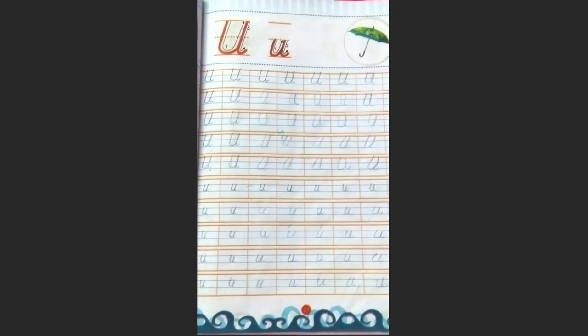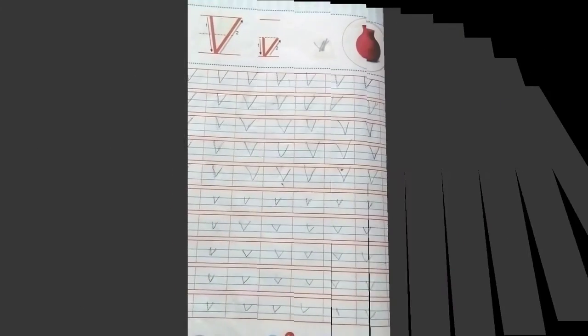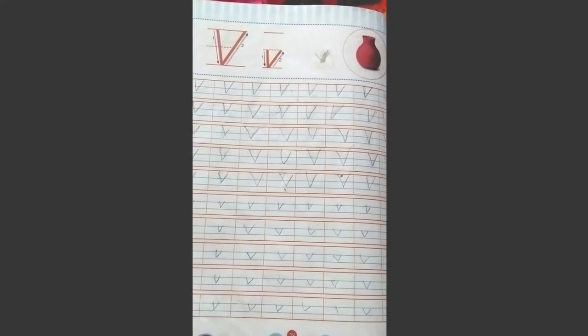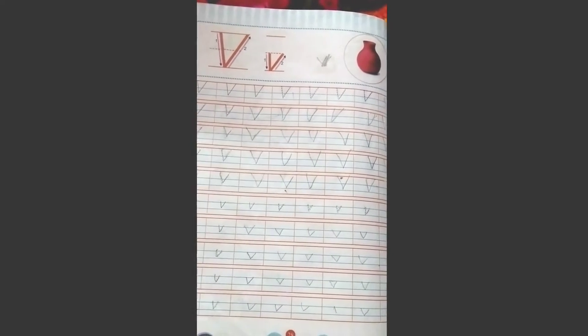Capital U and small u, U for under. Capital V and small v, V for van. Capital W and small w.